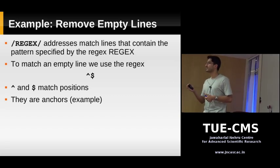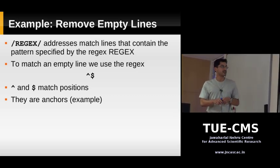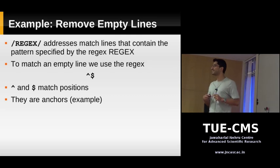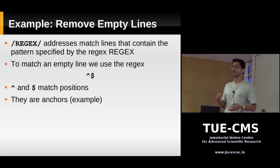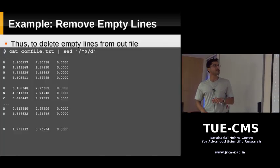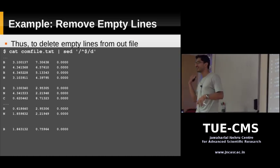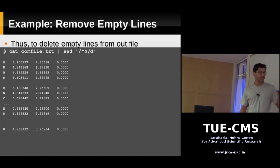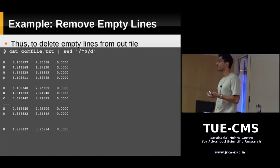An empty line has a beginning and an end but nothing in between — no characters. Technically, dollar does not match the end of line; it actually matches the end of a string. But in sed, since it always works in terms of lines and reads one line at a time, our end of string is the end of line itself. When you run this command, it removes some of the empty lines but not all of them.